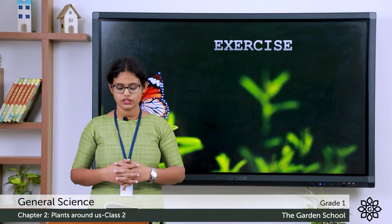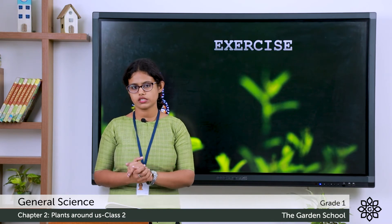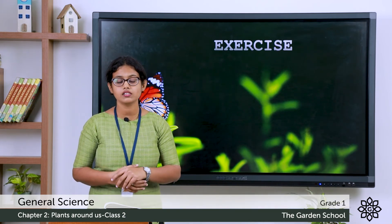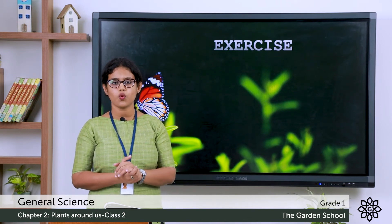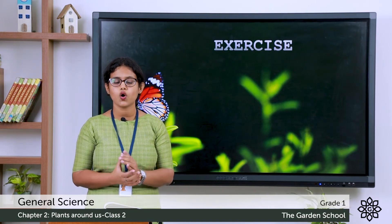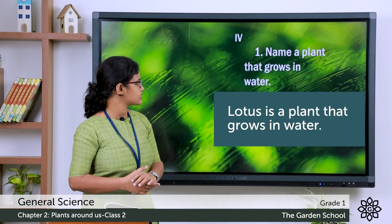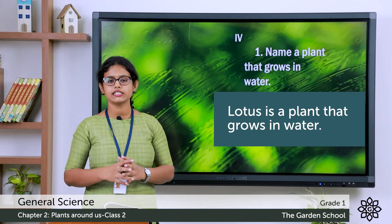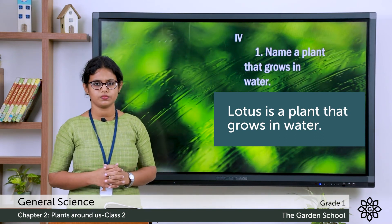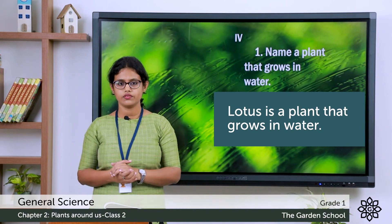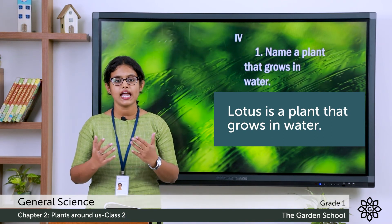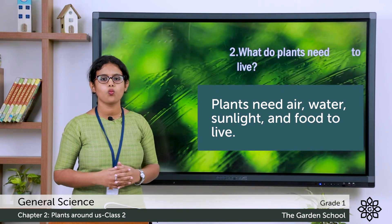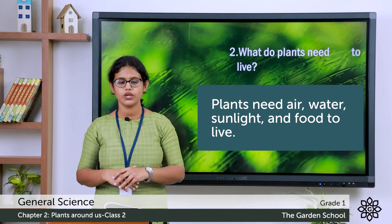Moving on to the fourth exercise: write a complete sentence to answer each question. First question: name a plant that grows in water. We discussed lotus and water lily — these are plants which grow in water. You can write: 'Lotus is a plant that grows in water.' Second question: what do plants need to live? Plants need air, water, food and sunlight to live.